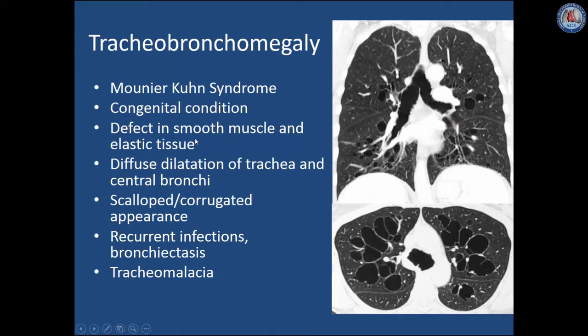Tracheobronchiomegaly, otherwise known as Munir-Kuhn syndrome, is a congenital condition in which there is a defect in smooth muscle and elastic tissue. As a result, there is diffuse dilatation of the trachea and main bronchi with a characteristic scalloped or corrugated appearance, in which the mucosa protrudes between the cartilages. These patients are prone to recurrent infections and may in time develop bronchiectasis, as seen in this patient with bilateral cystic bronchiectasis, and in some patients they will develop tracheomalacia.